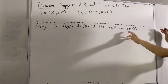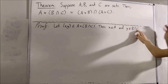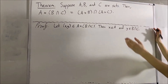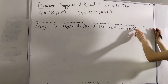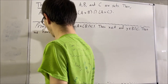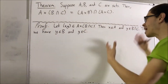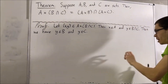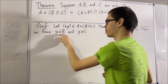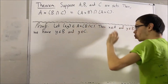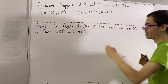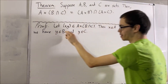Now, because Y is an element of B and C, we can write that Y is an element of B, and also that Y is an element of C. And notice, because X is an element of A and Y is an element of B, we have that the ordered pair X comma Y is an element of A times B.